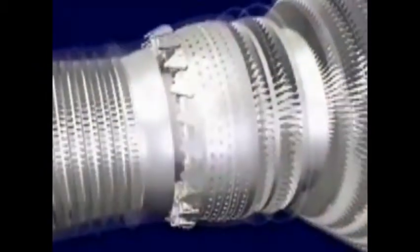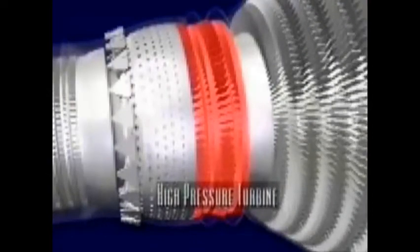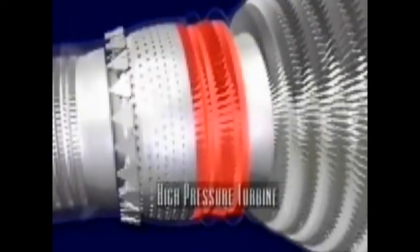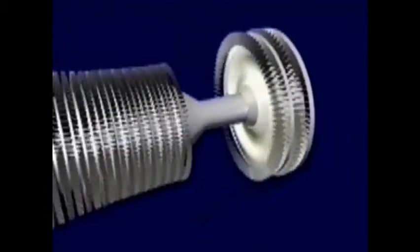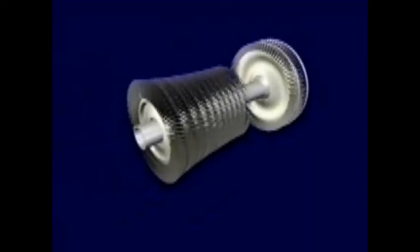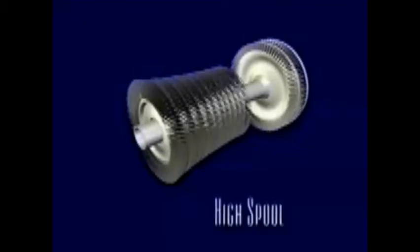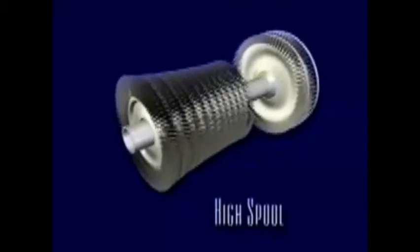Now the superheated and compressed air mixture is ready for the next phase. Blasting through the high-pressure turbine, the high-energy air spins the blades at over 10,000 revolutions per minute. These blades are connected to a shaft that runs through the center of the engine and drives the high-pressure compressor. In fact, the only purpose of the high-pressure turbine is to extract enough energy from the air to turn the high-pressure compressor. Together, these components make up the high spool.